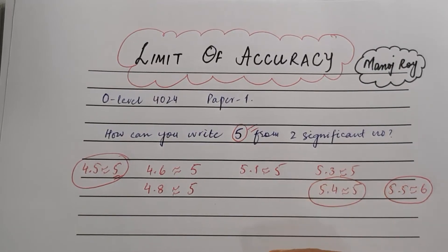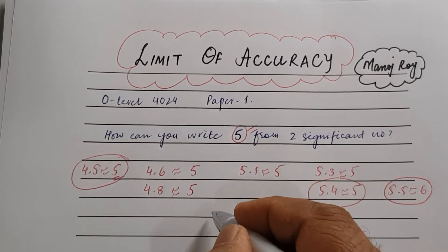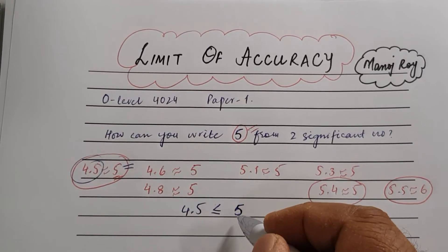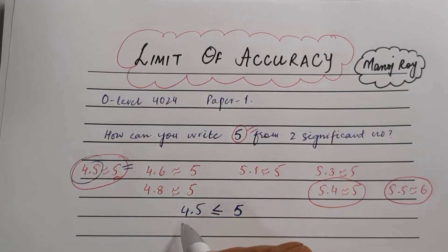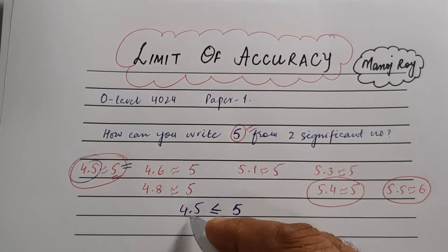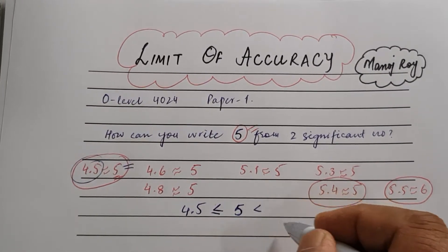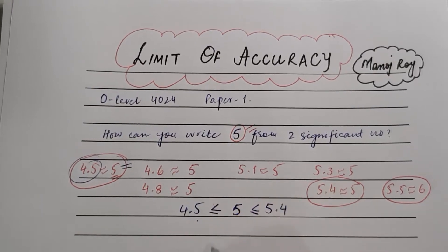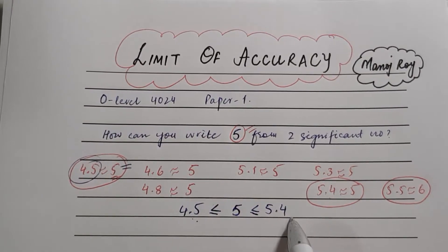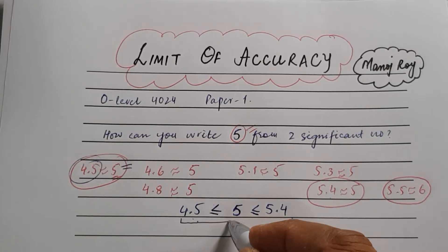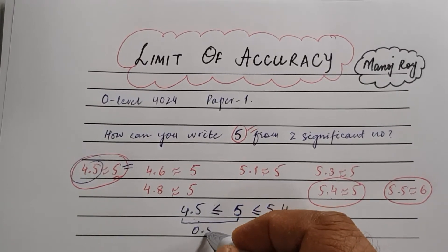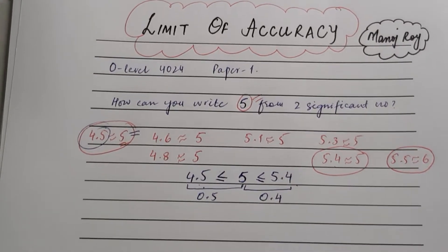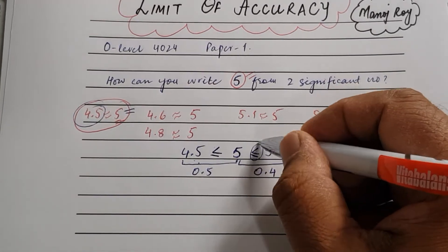When you want to get 5 from rounding, the minimum value should be 4.5 and the maximum value equals 5.4. So the range is from 4.5 to 5.4. The difference between 5 and 4.5 is 0.5, and the difference between 5 and 5.4 is 0.4 — these are not equal.